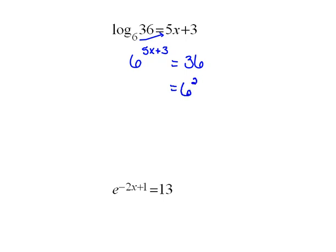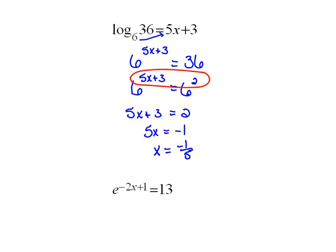So I could rewrite that as 6 squared. So now I have 6 to the 5x plus 3 power equals 6 squared. And now our exponents must equal each other. So 5x plus 3 must equal 2. And now this is a simple equation to solve. We subtract 3 from both sides, we get 5x equals negative 1. And dividing both sides by 5, we get x equals negative 1 fifth. So we have solved for x there.